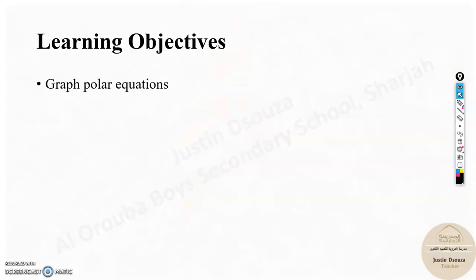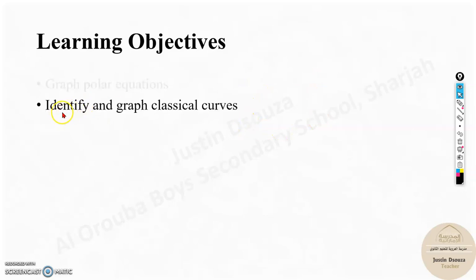The learning objectives of this lesson are graphing polar equations. It is very simple and straightforward. By table of values, you plot the points and graph. And the second objective is to identify and graph classical curves. Classical curves are special types of curves which we will come across in this lesson.